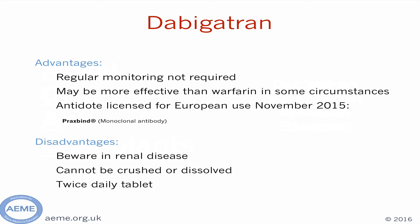Dabigatran is a NOAC taken twice daily at a dose of either 110mg or 150mg twice daily, depending on age and renal function. In some circumstances, dabigatran has a lower bleeding risk than warfarin, and it now has a licensed antidote. Disadvantages include the need to monitor renal function carefully, and being a twice daily tablet which, particularly in the elderly population, might be a burden on the patient.